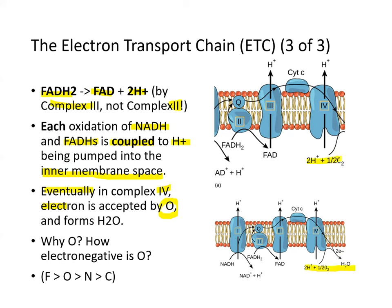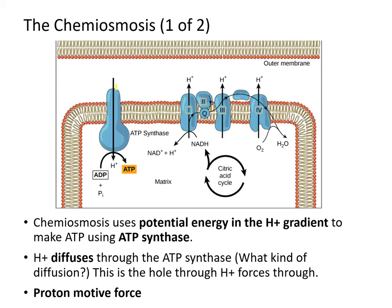Two protons plus half of O2 produces one water molecule. Oxygen is the terminal electron acceptor because it is one of the most electronegative elements. Chemiosmosis uses the potential energy of the proton gradient set up in the inter-membrane space to make ATP using ATP synthase. Protons move through ATP synthase, converting ADP and inorganic phosphate into ATP.